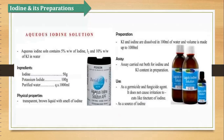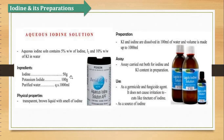So first is aqueous iodine solution. Aqueous iodine solution mein kya hai hamare paas: 5% weight by weight of iodine and 10% weight by weight of potassium iodide. Ingredients mein: 50 gram iodine, 100 gram potassium iodide, total water 1000 ml. Yeh hoga aapka aqueous iodine solution.